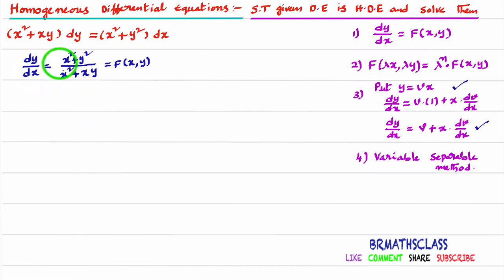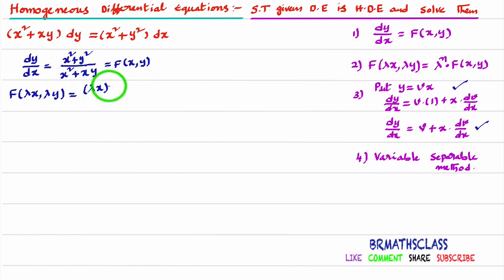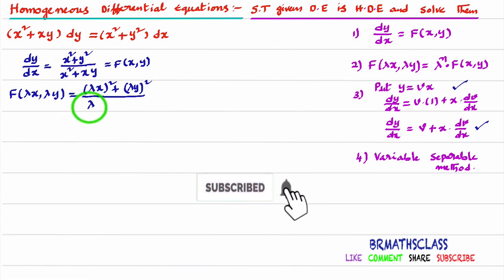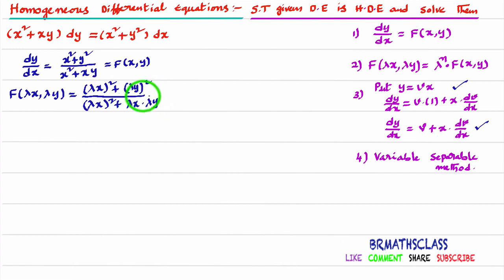Now, to check whether it is a homogeneous differential equation, I will calculate f(λx, λy). In f(x, y), replace x with λx and y with λy. The numerator becomes (λx)² + (λy)² = λ²x² + λ²y². The denominator becomes (λx)² + (λx)(λy) = λ²x² + λ²xy.